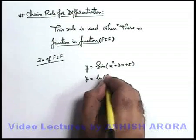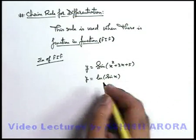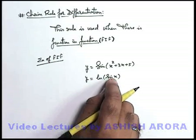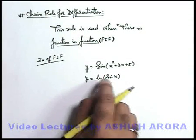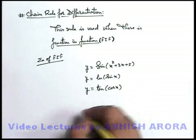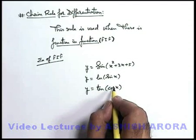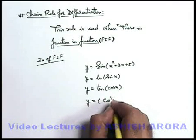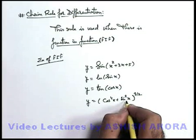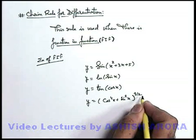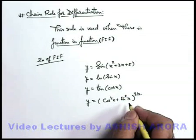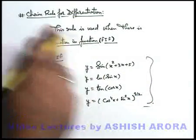Another function can be given as ln(sin x). Till now we have studied natural log as y = ln(x), but instead of x we are having another function. So in the logarithmic function we are having a trigonometric function — this is the case of function in function. Similarly, we can write y = tan(cos x). Again, in a trigonometric function another trigonometric function is given. Like if we are given with (cos⁴x + sin²x)^(3/2), here this is a trigonometric relation but the whole power 3/2 gives us an idea about an algebraic function. So these are the cases of function in function whenever chain rule is used.